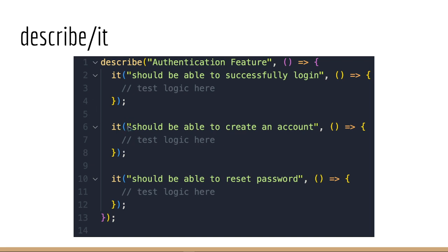It is used to define individual test cases within a test suite. It takes two arguments: a string that describes the specific behavior being tested and a callback function that contains the code that implements the test. The purpose of the it function is to specify a single, individual, atomic test case. This helps to ensure that each test case is easy to understand and maintain, and also makes it easier to isolate bugs or issues that arise during testing.